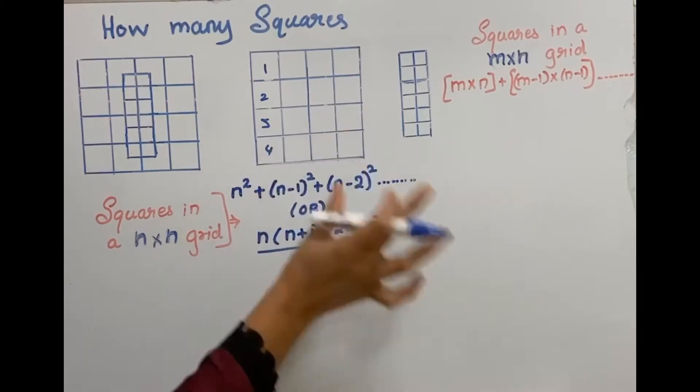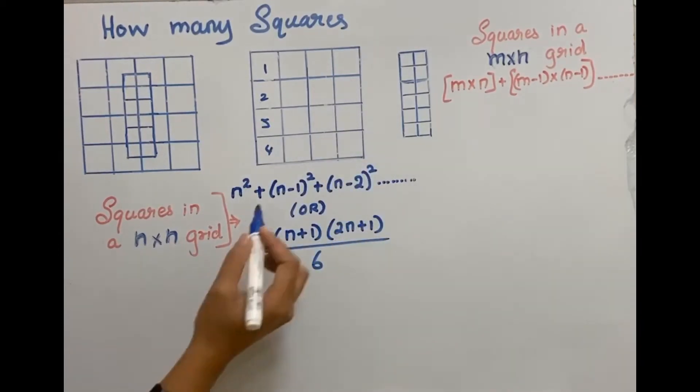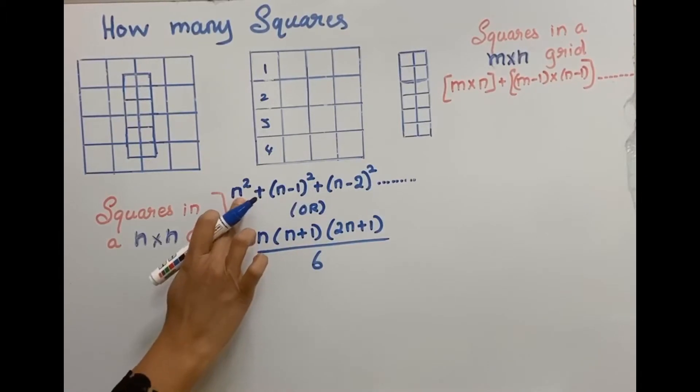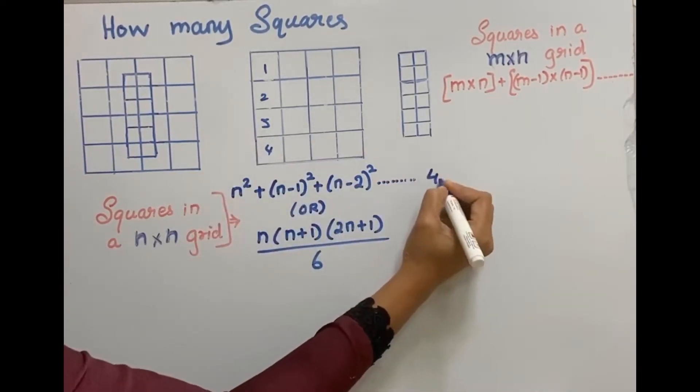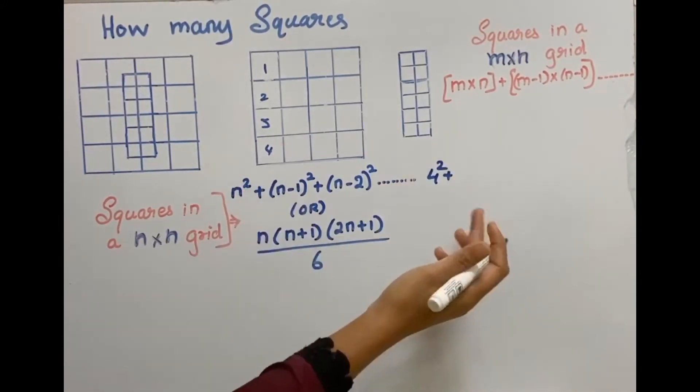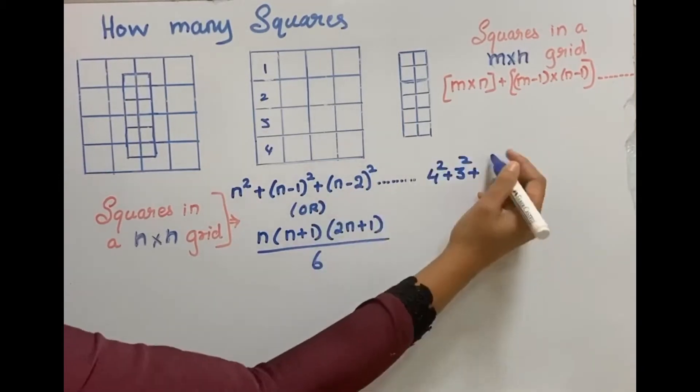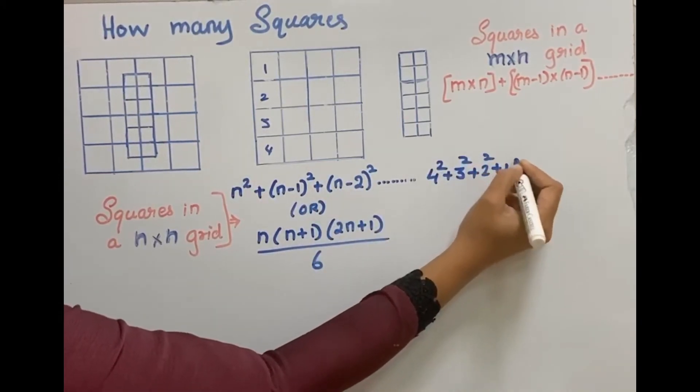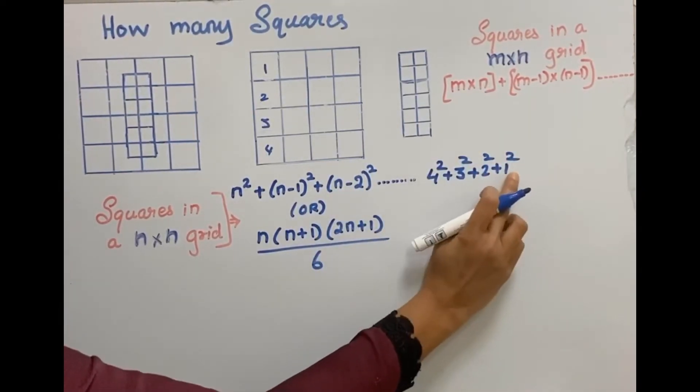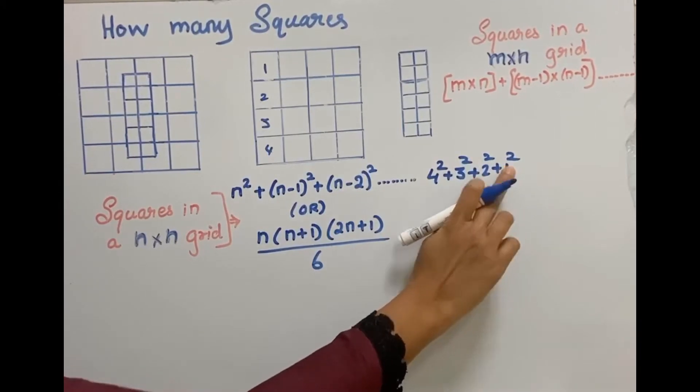To count the squares in a 4 into 4 grid, we can use either this formula or this formula. First, by this n square, n is 4, so 4 square, then n minus 1, which will be 4 minus 1, then n minus 2. So we have to do this till we reach 1. Once we reach 1, stop.